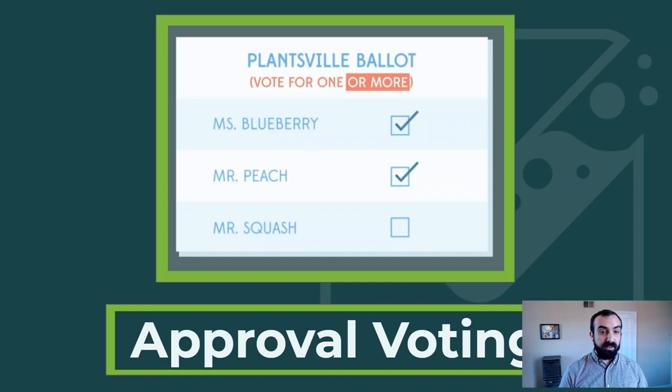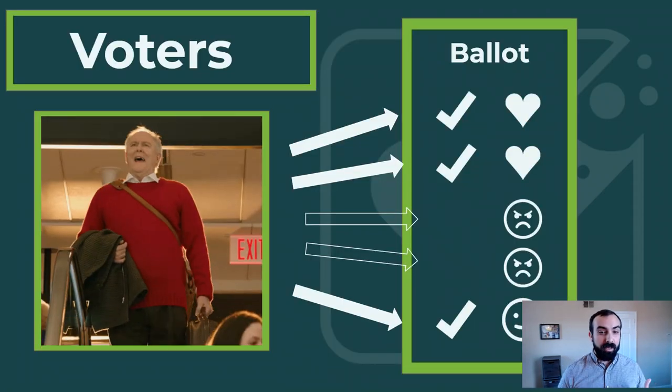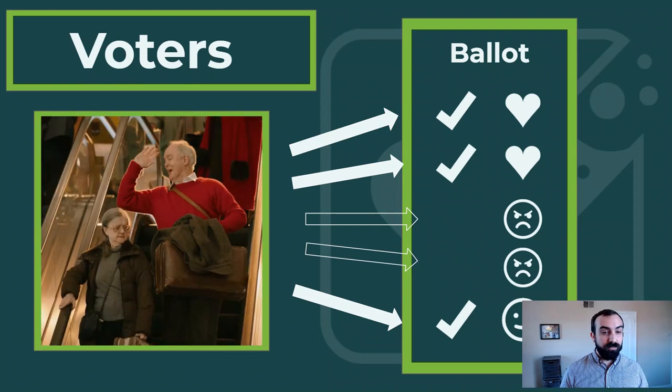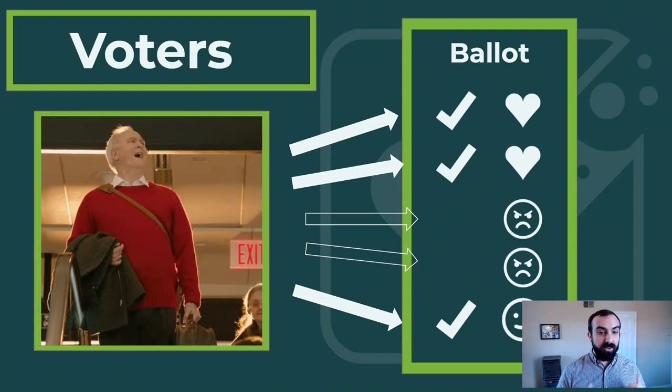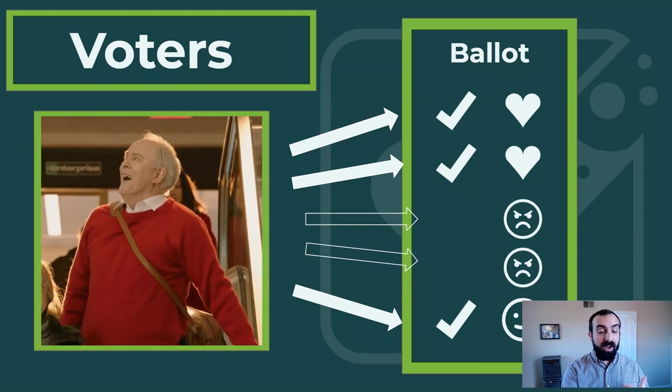Voters get to finally have a say in all the candidates they like, no longer diminishing their power. They go from internally conflicted to empowered. Now they can vote for everyone they like, even similar ones, and don't have to worry about throwing their vote away or getting a bad outcome.